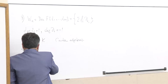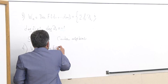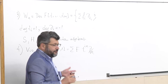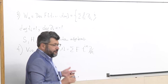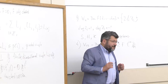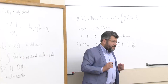Fourth example: let us consider the famous Virasoro algebra, the algebra of derivations of Laurent polynomials in one variable. It is a direct sum of t^{i+1} d/dt. It is Z-graded, and the dimension of every component is equal to 1. This algebra and those algebras have very interesting central extensions.